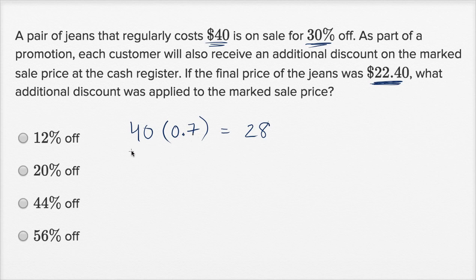Right? Yes, seven times four is 28. 0.7 times 40 is also going to be 28. So it's going to be $28 would just be the 30% off. But the final price of the jeans was $22.40. What additional discount was applied to the marked sale price?